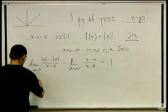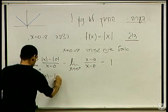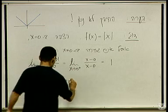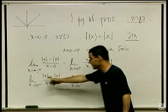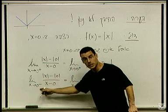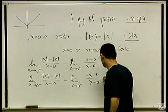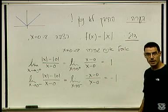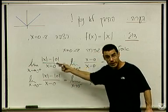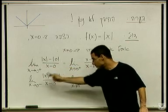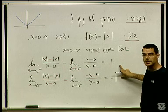מה עם הגבול כש-x שואף ל-0 משמאל? x-ים שליליים - ערך מוחלט x זה מינוס x, אז זה מינוס x מינוס 0 חלקי x מינוס 0, וזה מינוס 1. אז הגבול שמגדיר את הנגזרת לא קיים, כי הגבול מימין והגבול משמאל אינם שווים. אז אין נגזרת ב-0.